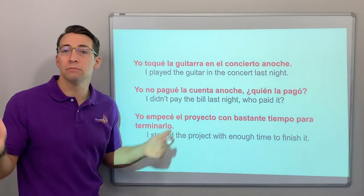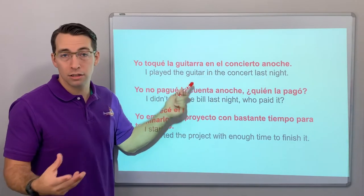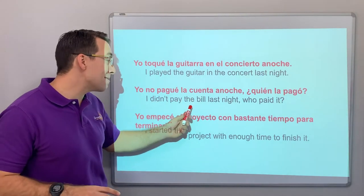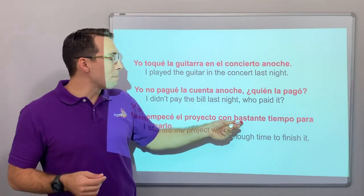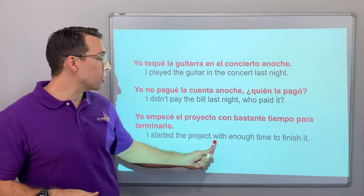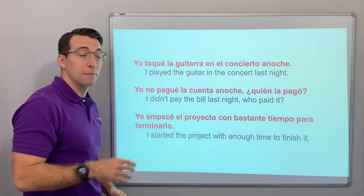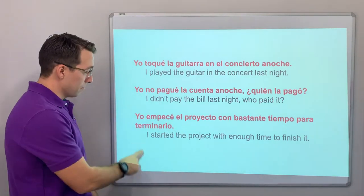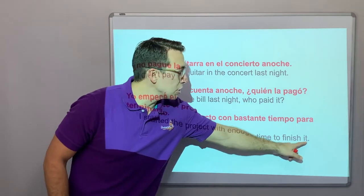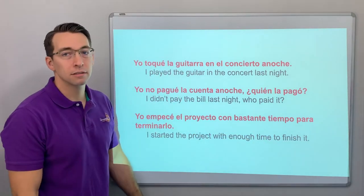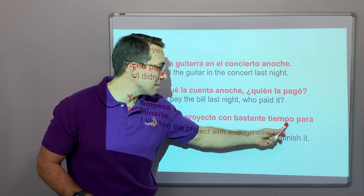Just three examples. Yo toqué la guitarra en el concierto anoche — I played the guitar in the concert last night. Yo no pagué la cuenta — I didn't pay the bill. ¿Quién lo pagó? — Who paid it? Yo empecé el proyecto con bastante tiempo para terminarlo — I started the project with enough time to finish it. Note: 'para' plus infinitive means 'in order to,' and the direct object pronoun 'lo' is attached to the end of the infinitive. Terminarlo refers to el proyecto — masculine singular.